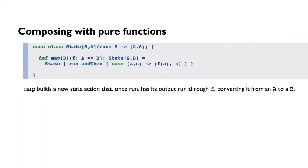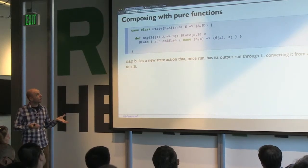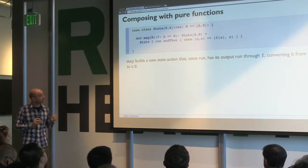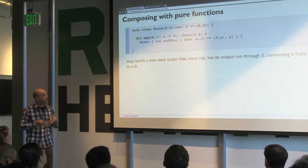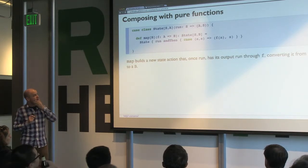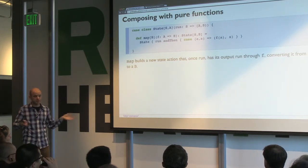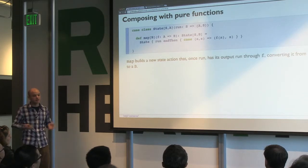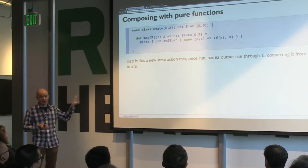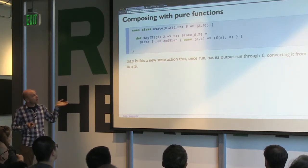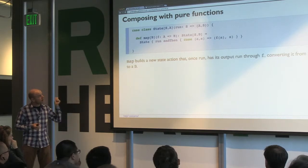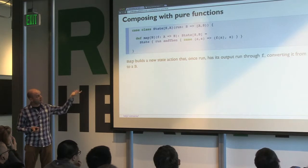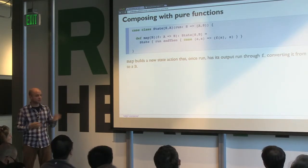Now that we have this case class we can start composing it with different things. We want a way to take our state action and do something with its output. Let's say our run function returns a tuple (a, s) and we have another function f that can convert the a into something. This function f is "pure" because it doesn't care about the state coming into or going out of our run function — it just knows how to manipulate the value. So all we need to do is compose run and then apply f to the a, giving us a b, and return the same s since it hasn't been changed.